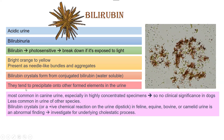Bilirubin crystals tend to precipitate onto other formed elements in urine. Basically, either there is a high concentration of bilirubin so it will precipitate and accumulate onto itself and form a crystal, or if there is high bilirubin in the urine and there are cells present — like squamous cells or transitional epithelial cells from the urinary tract — bilirubin will start to precipitate onto these formed elements and form crystals, rather than clumping onto itself.